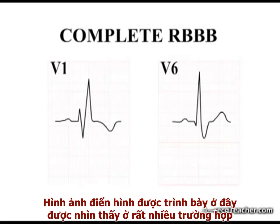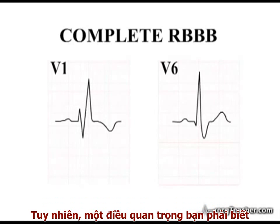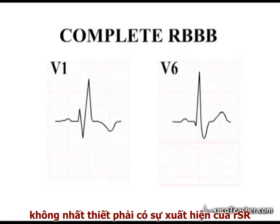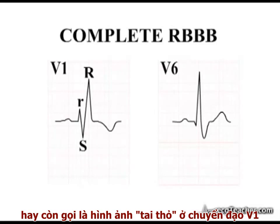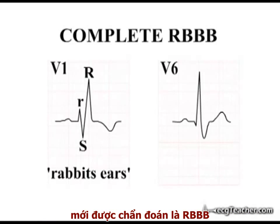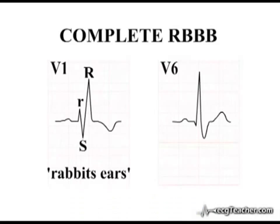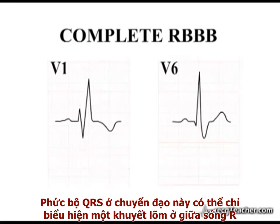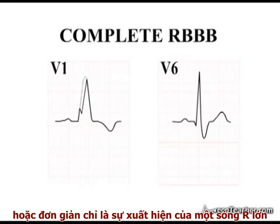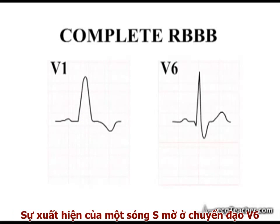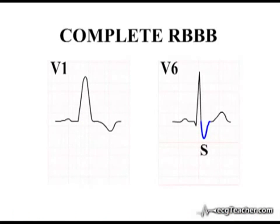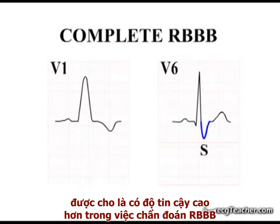The classic RSR pattern is seen in many cases. However, it is important not to become over-reliant on the presence of the RSR pattern, or so-called rabbit's ears appearance in V1, to make the diagnosis. In many cases of right bundle branch block, the RSR pattern in V1 is not identifiable, with the QRS complex either demonstrating a small notch between the two R waves or having the appearance of one large R wave. The presence of a slurred S wave in lead V6 is said to be more reliable in the diagnosis of right bundle branch block.